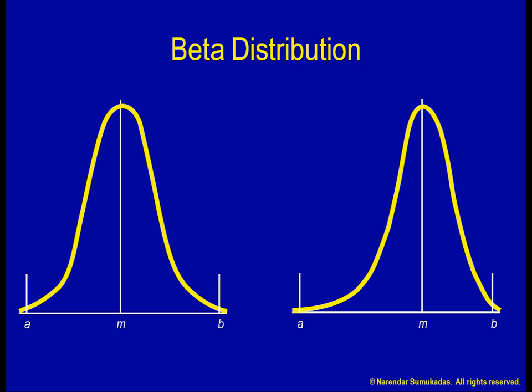When the distribution is symmetrical, the mean is equal to the mode, M. When the distribution is skewed, I can calculate the mean as a weighted average of A, B, and M, with A and B weighted once and M weighted four times. I can also calculate the variance of that estimate.